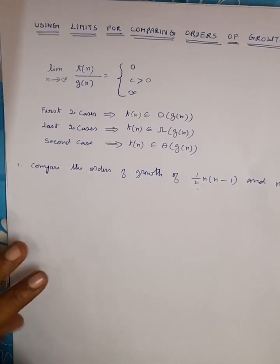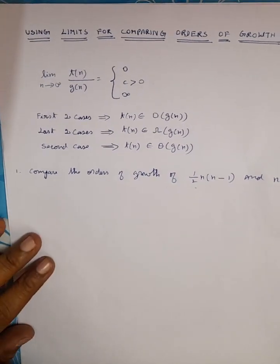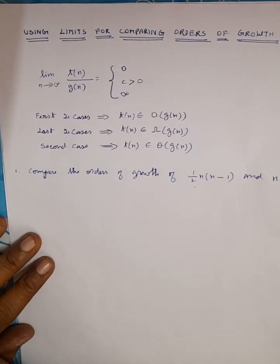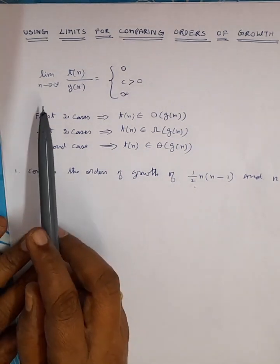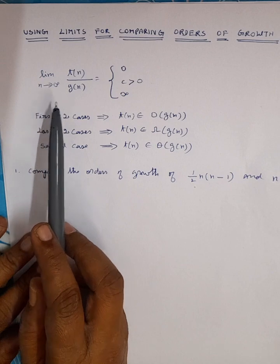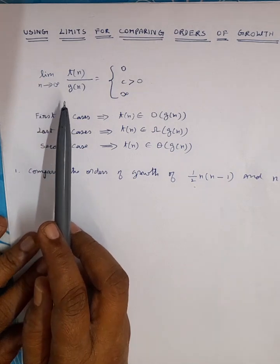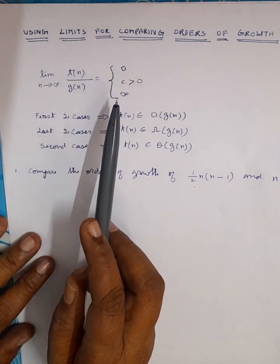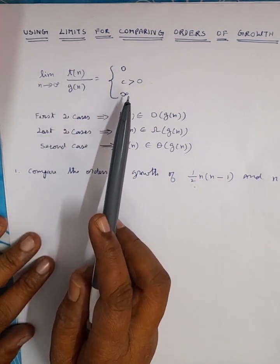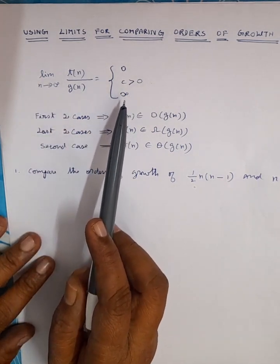Asymptotic notations are rarely used for comparing the orders of growth of two specific functions. The limit as n tends to infinity of t(n) divided by g(n) is equal to 0, or a constant, or infinity.